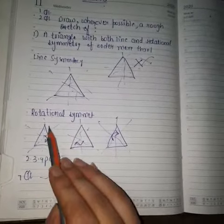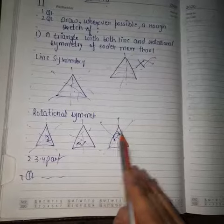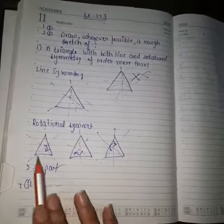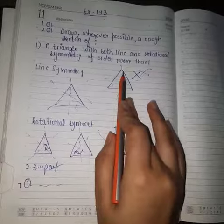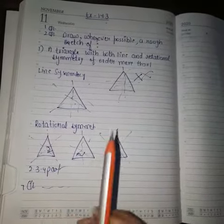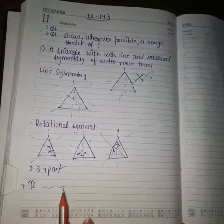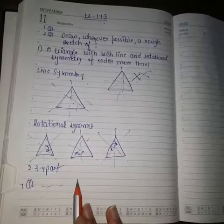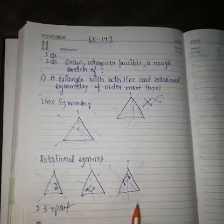The triangle is symmetrical from one side to the other. The second, third, and fourth parts you have to solve on your own. There are also one and two line answer questions — two angles that you have to solve.